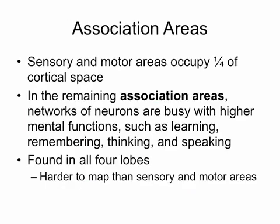Sensory and motor areas occupy about a quarter of all the space in the cortex. The remaining association areas are networks of neurons that give us the human power of thinking, learning, remembering, and speaking. Association areas are in all four lobes, which makes them a lot harder to map than sensory, motor, vision, and hearing areas.